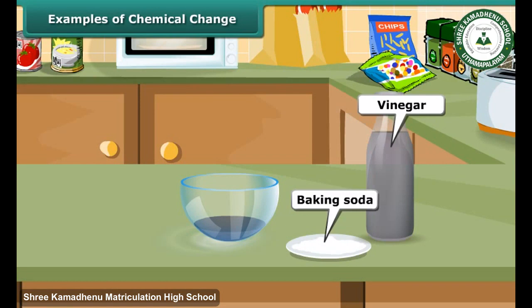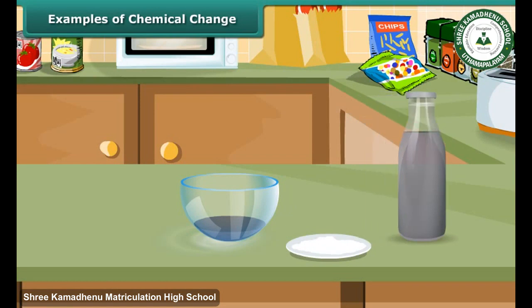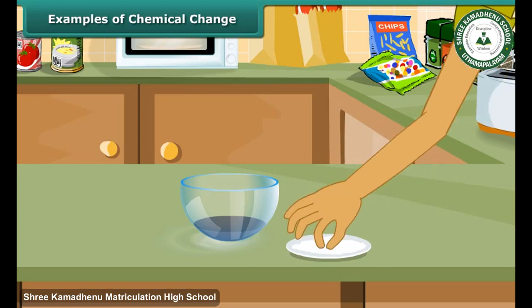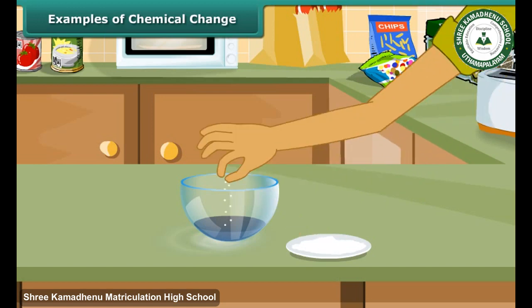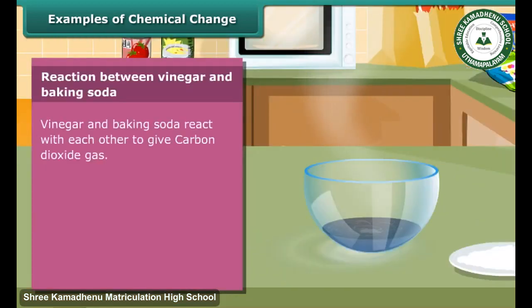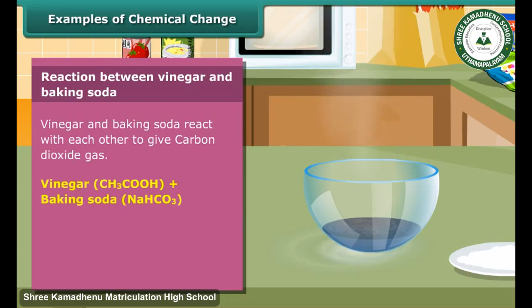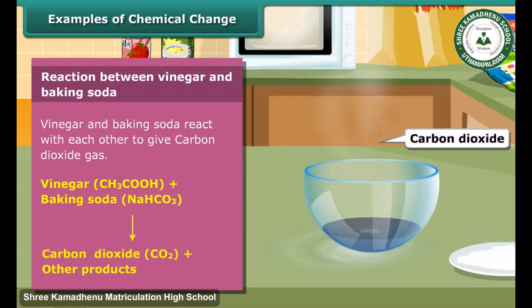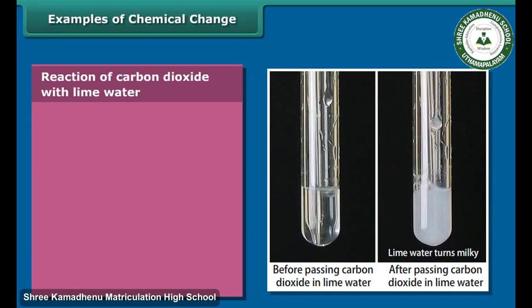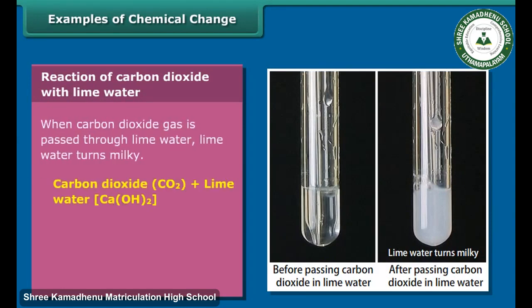Vinegar and baking soda are easily found in our kitchen. Take a little vinegar in a small bowl made of china clay and add a pinch of baking soda to it. You will hear a hissing sound and see bubbles of gas coming out. The evolved gas is carbon dioxide.